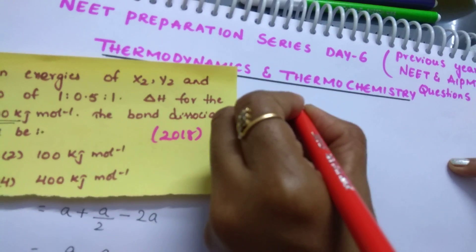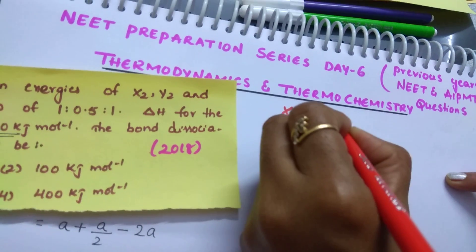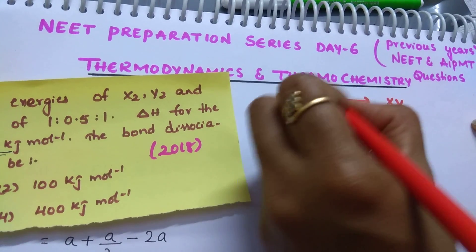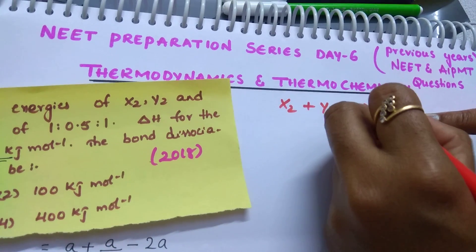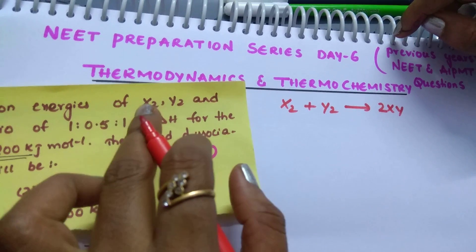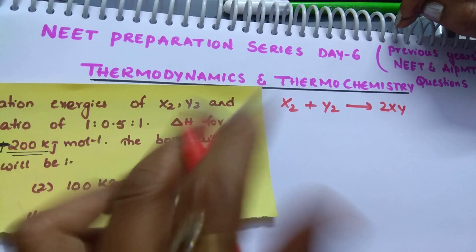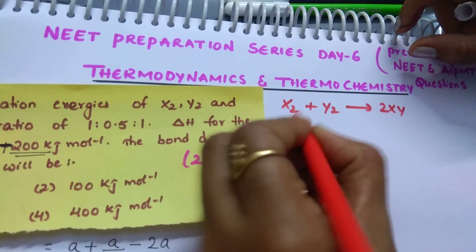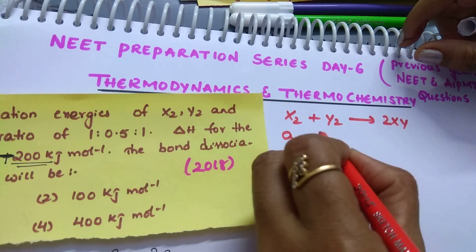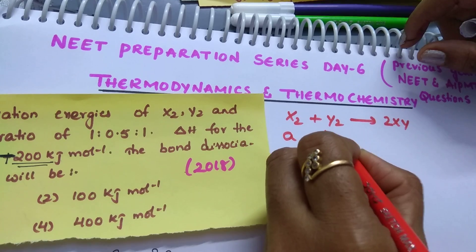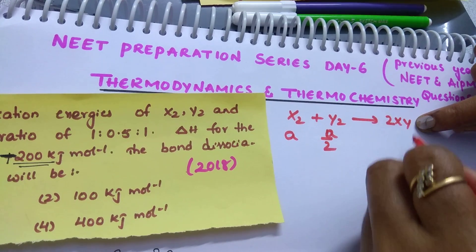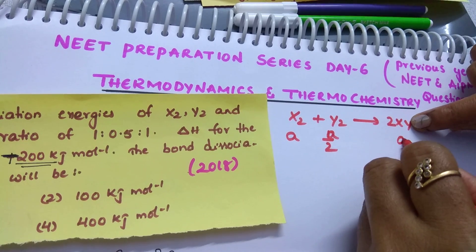X2 plus Y2 gives rise to 2XY. In this question, the bond dissociation enthalpies of X2 is given as ratio 1, let us take A. Y2 is half, so A by 2. And XY is ratio 1, so we take A. That is the amount of energy required to break the XY bond.